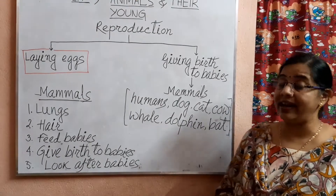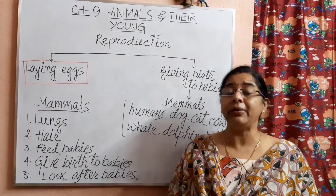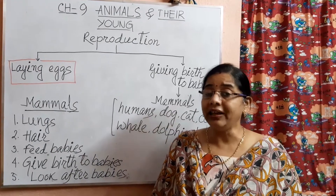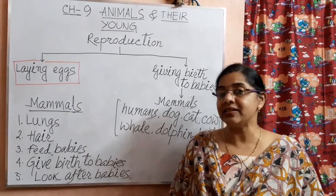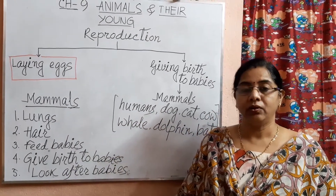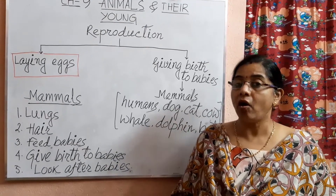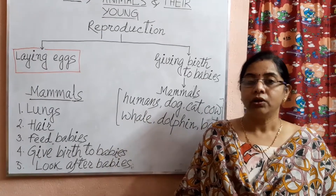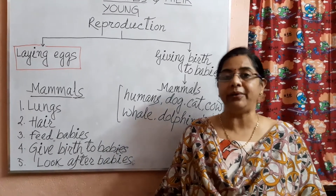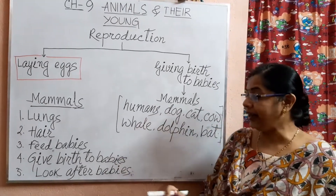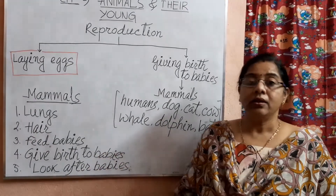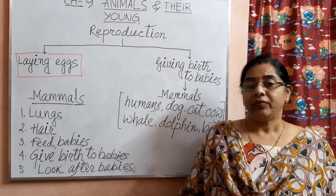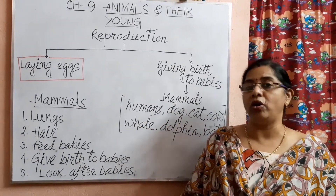Mammals have mammary glands, meaning the mother mammal feeds its baby with its own milk. Mammals feed their babies. Next, mammals are warm-blooded animals, meaning they maintain a constant body temperature.